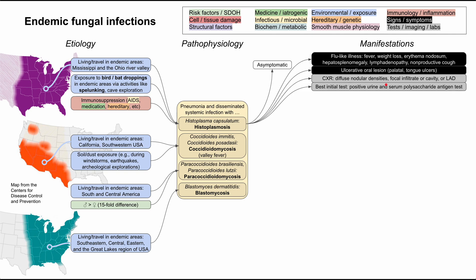The best initial test for histoplasmosis is a urine and serum polysaccharide antigen test. Then you'll do a confirmatory silver stain on a biopsy — from skin, oral ulcers, or a bronchoalveolar lavage — and you'll see macrophages filled with yeast cells. Red blood cells are used as a size reference; the Histoplasma capsulatum fungus measures one to five microns, whereas red blood cells are about 10 microns — so histoplasma is smaller than red blood cells.